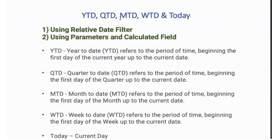In this video we will try to understand how to compute year to date (YTD), quarter to date (QTD), month to date (MTD), week to date (WTD), and how to display the data for the current date — today. We can do this using a relative date filter or we could create a parameter and calculated field to achieve this.